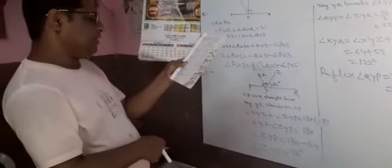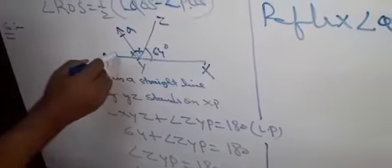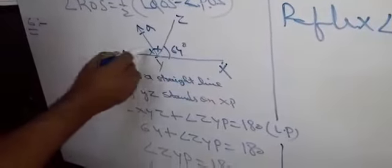In problem number 6, in the given figure, angle XYZ is equal to 64 degrees and XY is produced to point P. If ray YQ bisects angle ZYP, find angle XYQ and reflex angle QYP. XP is a straight line and YQ bisects angle ZYP, so angle QYP and angle ZYQ will be equal — the bisector makes two equal halves.